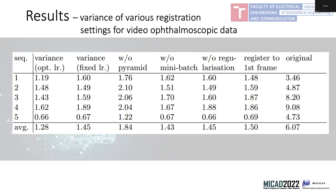Looking at objective results, the standard deviation of the variance of the original ophthalmoscopic data was six. We tested several versions, for example without pyramidal levels, without mini-batch, and without regularization. The best results were obtained with the Bayesian optimization approach.